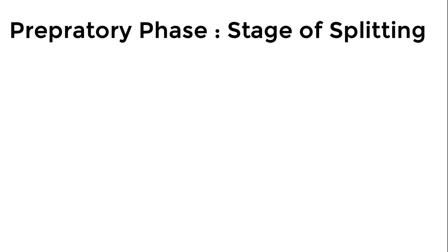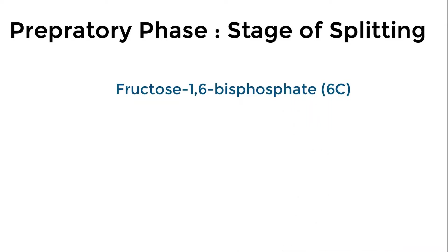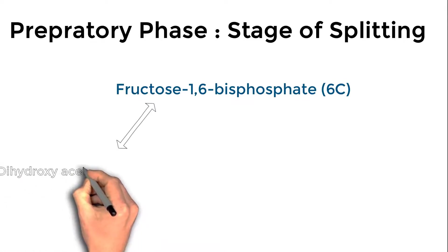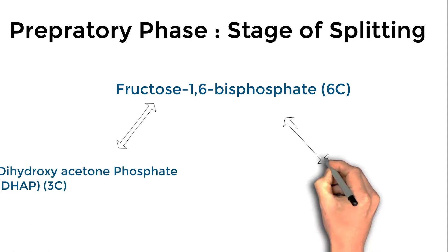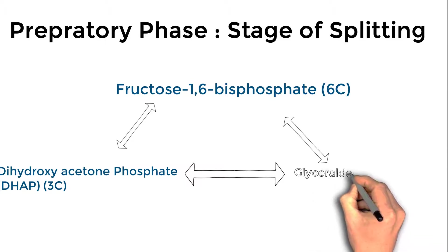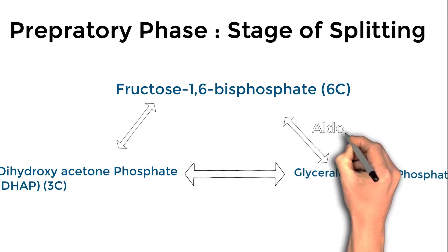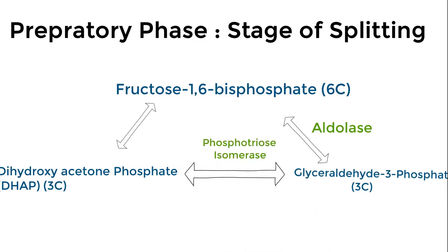The preparatory phase is the stage of splitting. Fructose 1,6-bisphosphate — a six-carbon compound — is split into two three-carbon compounds: dihydroxyacetone phosphate (DHAP) and glyceraldehyde 3-phosphate, under the enzyme aldolase. DHAP is reversibly converted into glyceraldehyde 3-phosphate under the enzyme phosphotriose isomerase.